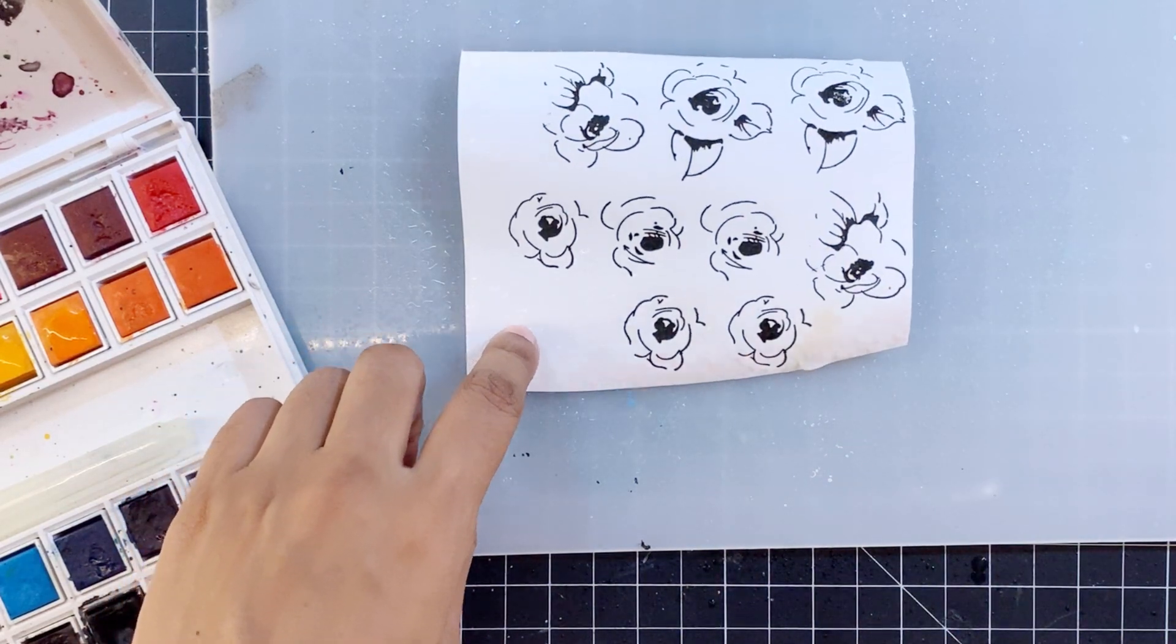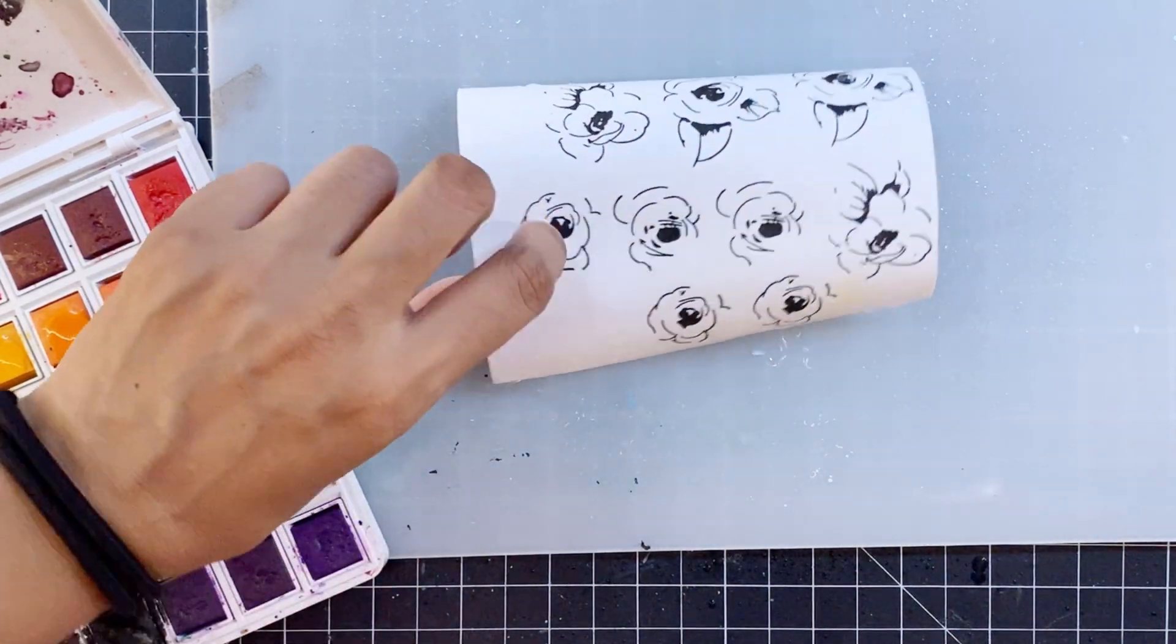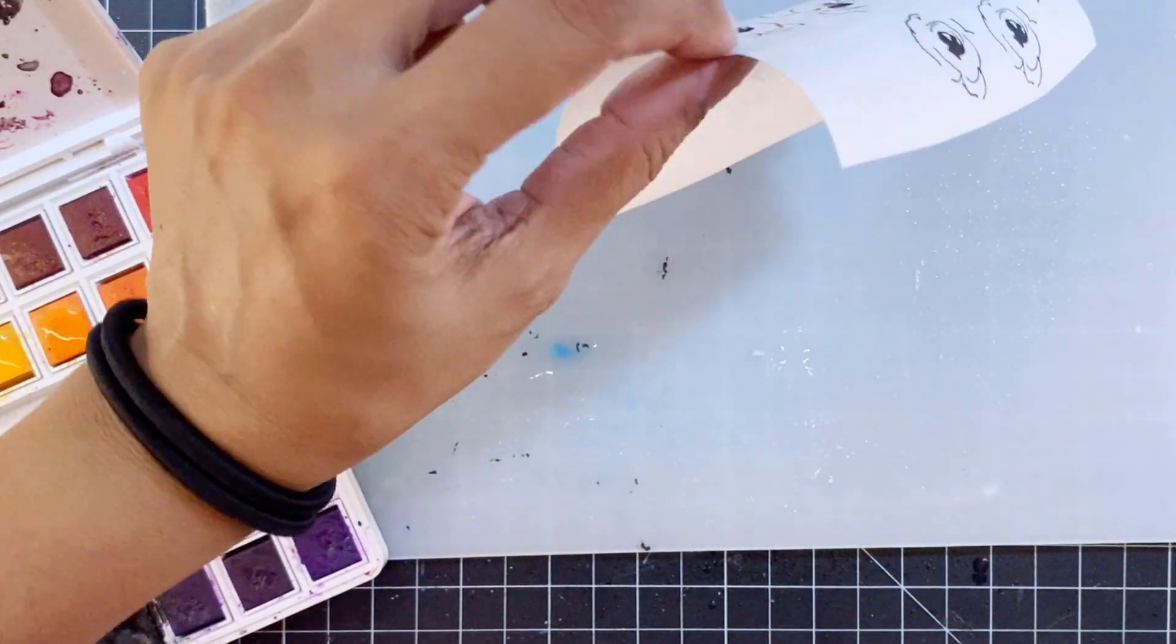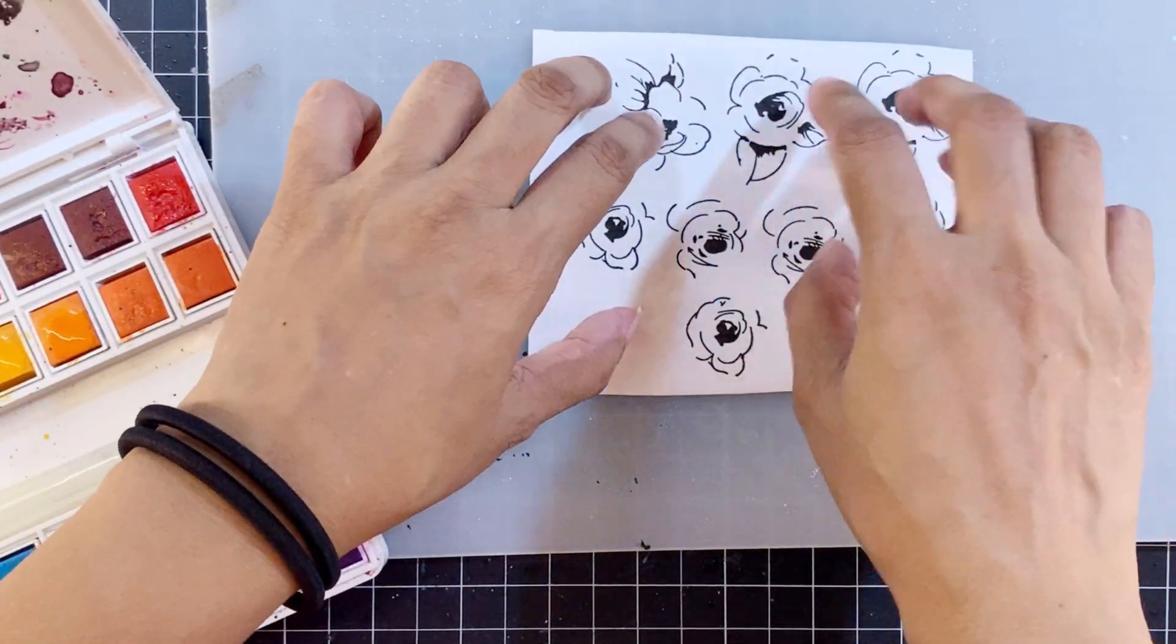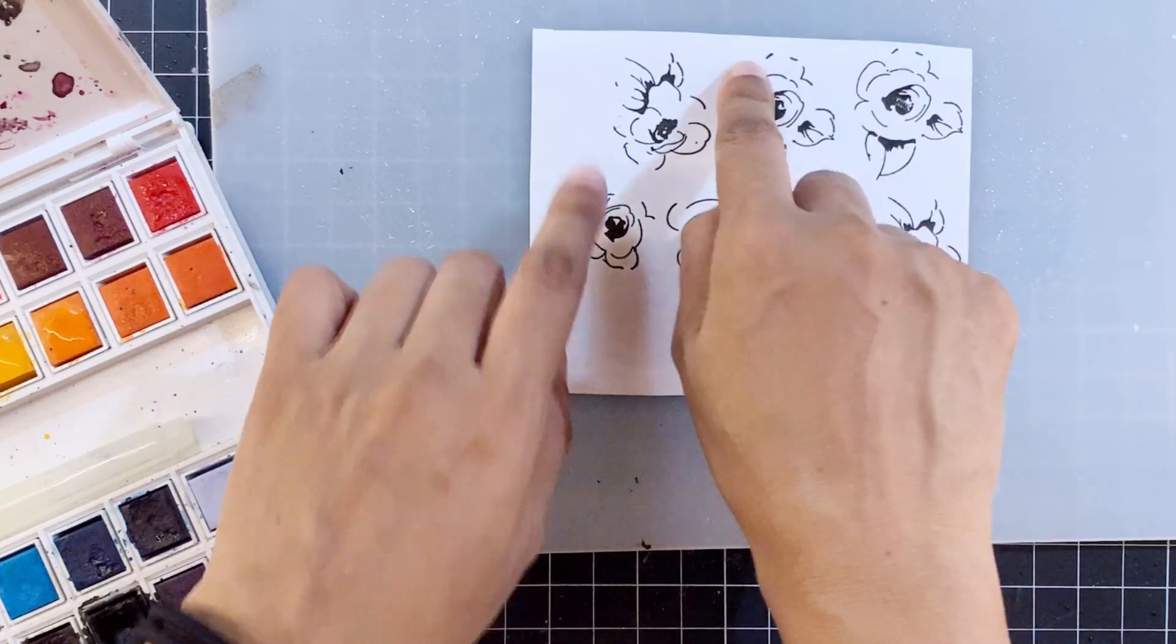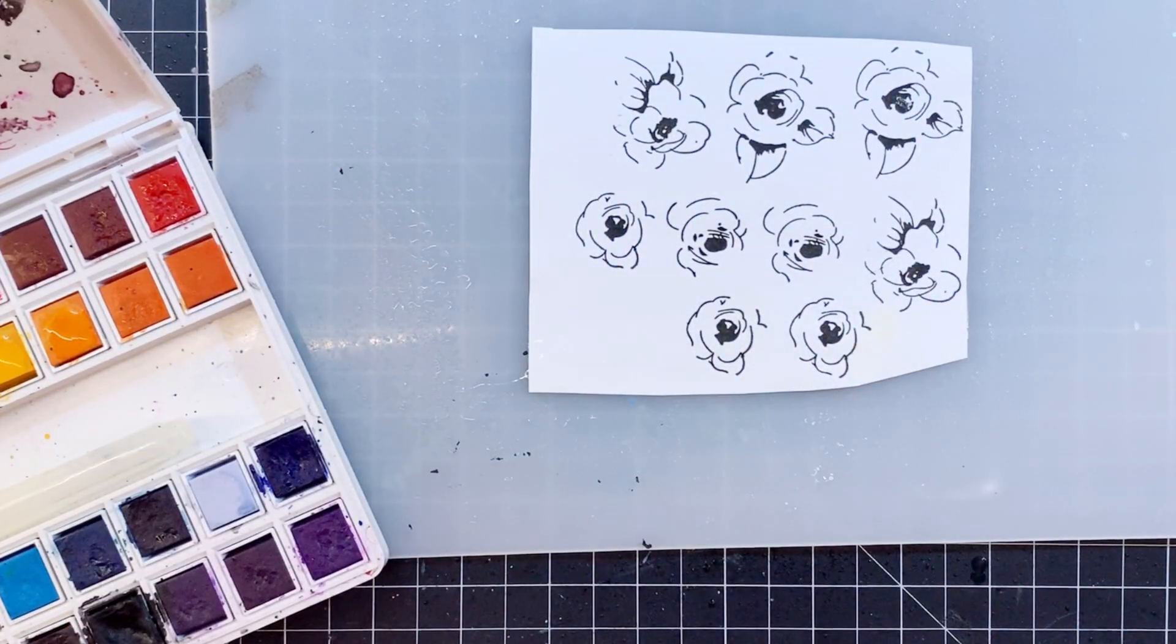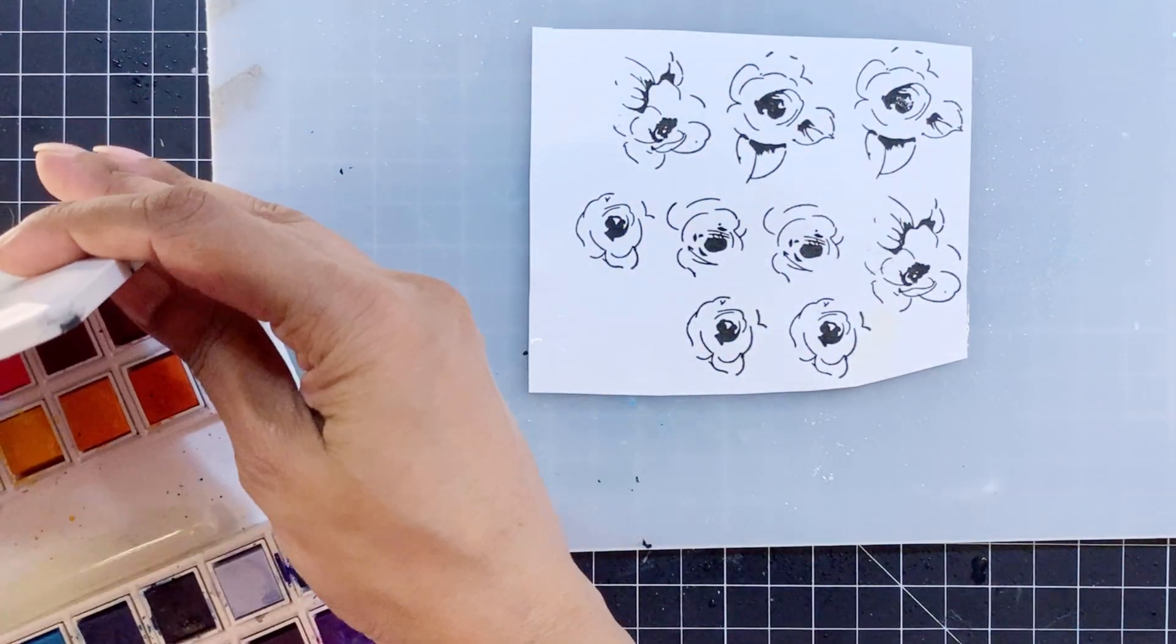For now I'll use my watercolour palette to avoid the mess and spray the stamped piece of watercolour paper generously with water. I'll also spray some water behind the paper so it doesn't curl and sticks nicely to the watercolour palette.